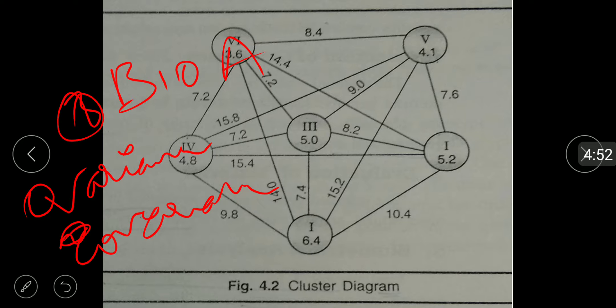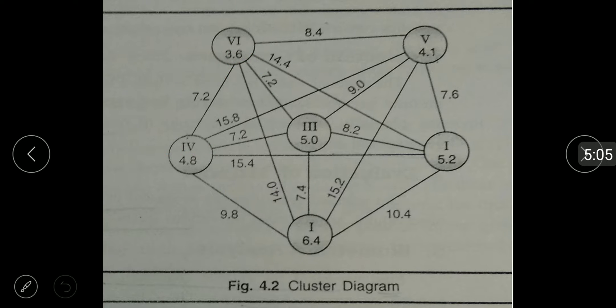Grouping of different genotypes into various clusters. Estimation of average distances at intra-cluster and inter-cluster levels. Construction of cluster diagram. This is the cluster diagram. In D-square analysis, a line diagram is constructed with the help of D-square values which is known as cluster diagram. The square roots of average inter and intra cluster D-square values are used in the construction of cluster diagram.